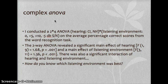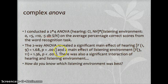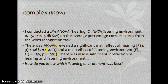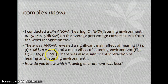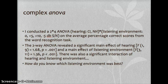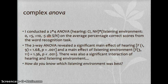The two-way ANOVA reveals a significant main effect of hearing, with a P value of 0.001, and a main effect of listening environment, also P less than 0.001. There was also a significant interaction of hearing and listening environment. You might ask: how do you know which listening environment is best? You can't determine this from an ANOVA. An ANOVA just tells you whether there is something significantly different, but it doesn't tell you where those differences are or which one is best.